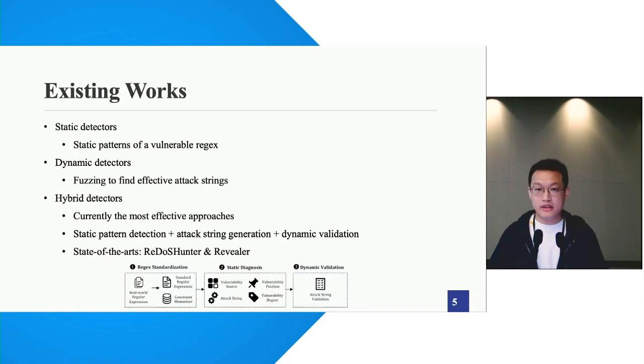There are several existing works trying to detect the ReDoS vulnerabilities, including the static, dynamic, and hybrid approaches. The hybrid approaches, which is the most effective method, tries to combine the benefits from both the static and dynamic world. It first identifies the candidates using the summarized vulnerability patterns, then it uses some SAT solver-based generation strategies to generate the attack strings, and finally it dynamically validates the generated attack strings.